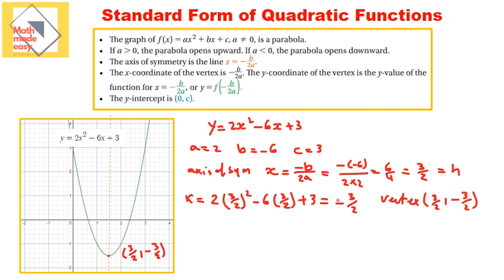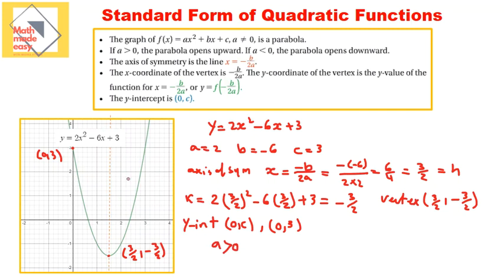I have found the axis of symmetry and the vertex. The y-intercept: we said it has to be at 0 and c, which is 0 and 3 in this case. Checking the graph — yes, 0 and 3 is the y-intercept. We can also tell that a is greater than 0, so the parabola is opening upwards, and the vertex is a minimum value. The domain is negative infinity to infinity, and the range will start from negative 3 over 2 to infinity.